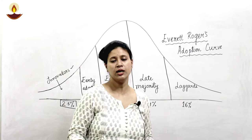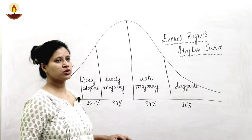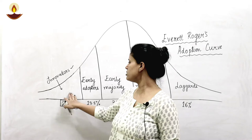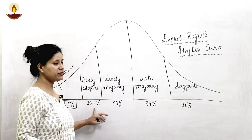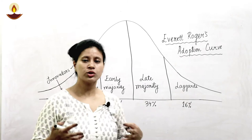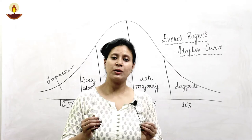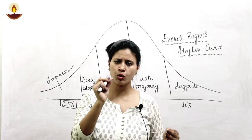Then we come to Early Adopters. Early Adopters are those who are willing to take risks — it's okay for them. But they buy after the recommendations, after the first approval of Innovators. They buy this product a little bit later. Their percentage is 13.5%. Though they like to take risks and want to try new products, they try it after the recommendation of the Innovators — not immediately when it comes to market.